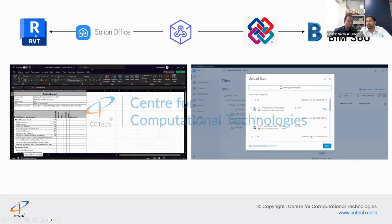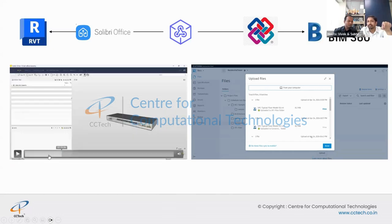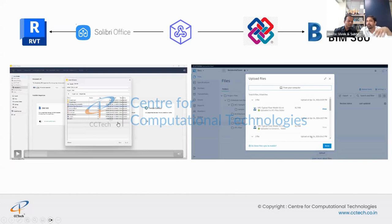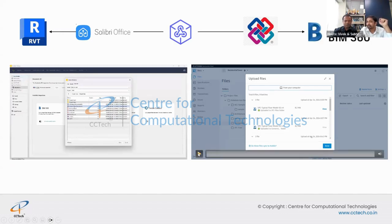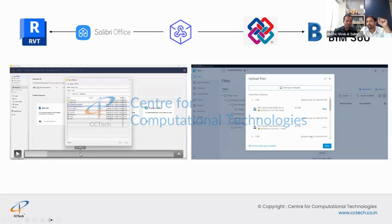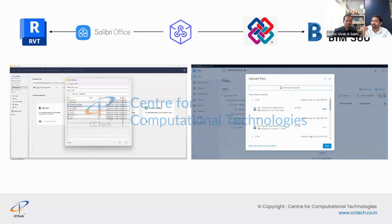After making modifications in Revit, you convert the file to IFC, bring that IFC into Solibri, run the compliance check, review results, and then upload the report back to ACC. This creates a structured revision and compliance management workflow.